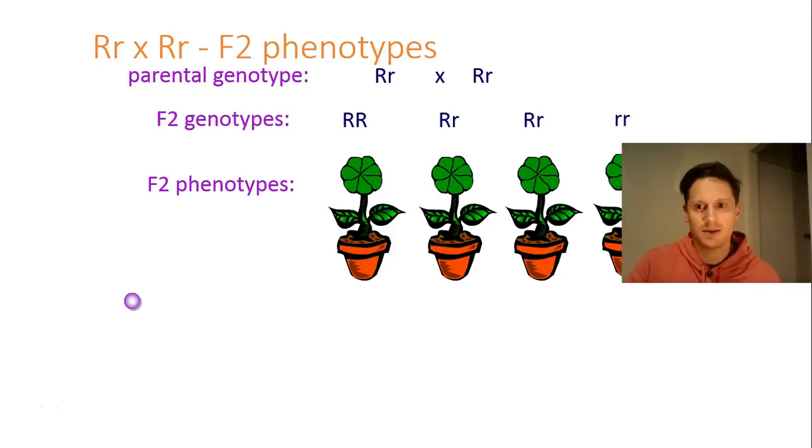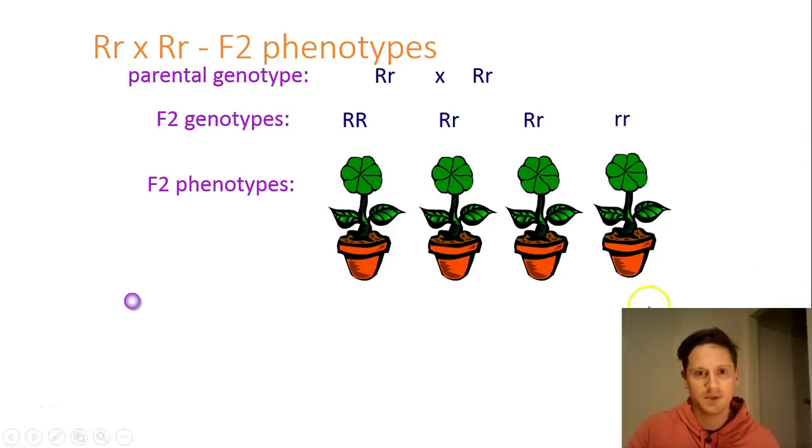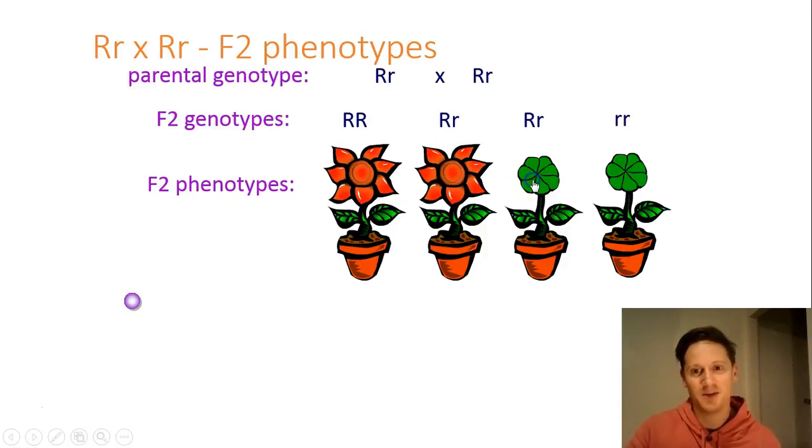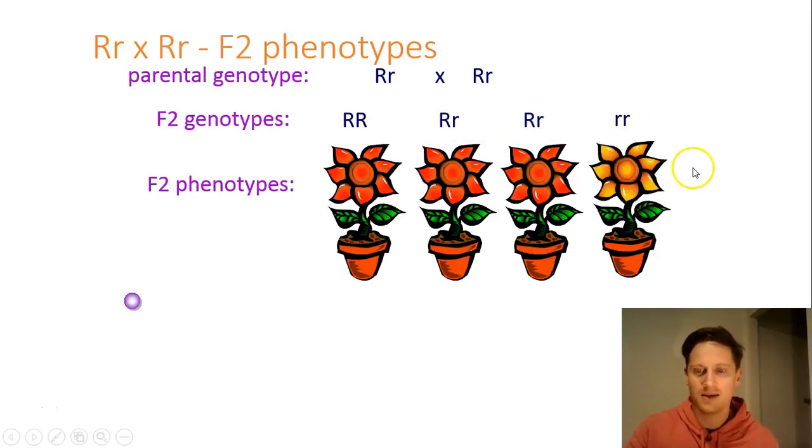What are the phenotypes of the F2 offspring? So what colours are the flowers going to be? We've got our four genotypes here. The phenotype, homozygous dominant, is going to be red, because you've got two copies of the red allele. Heterozygous is going to be a red phenotype as well, because you have the red allele dominant over the white recessive allele. And what about little r, little r? That's going to be white.